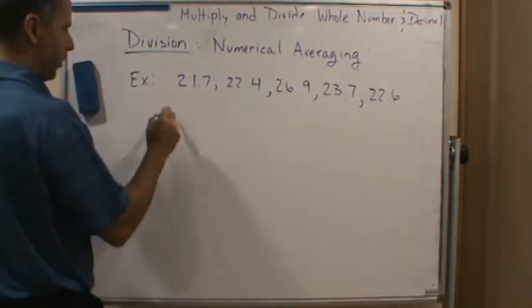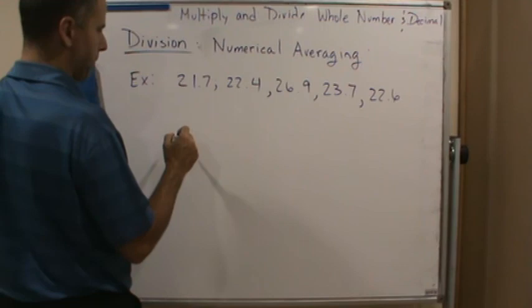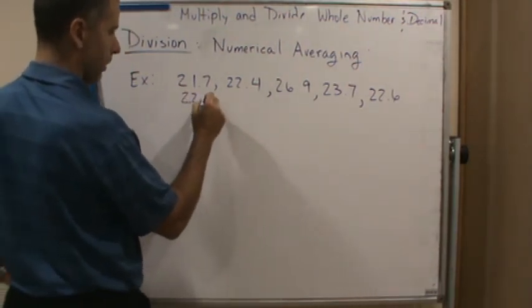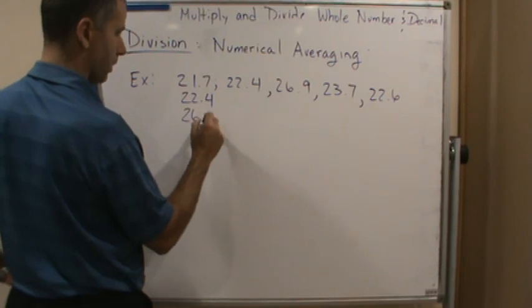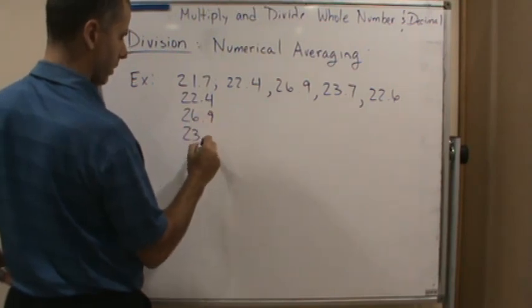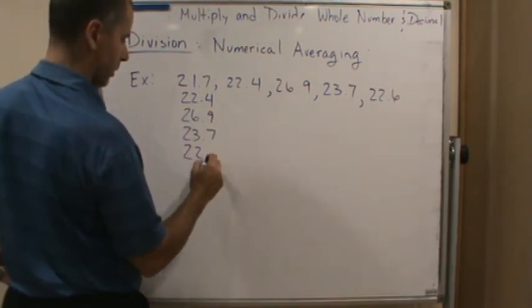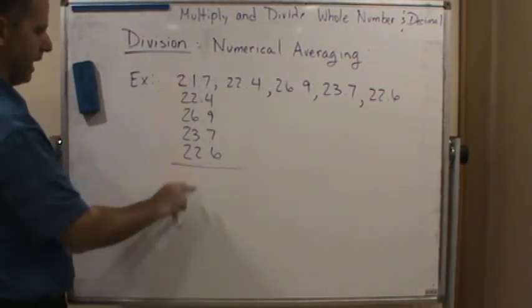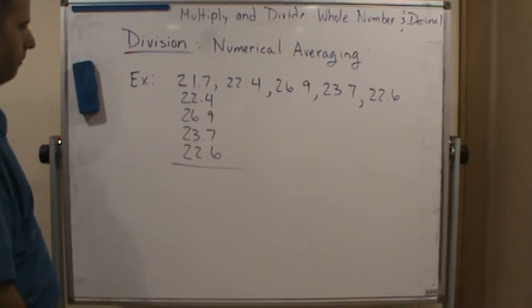And so what we're going to do is we're going to add those up, right? So we're going to add those up. So let's add them up. Okay, so if you add these up by column, let's see what we get.